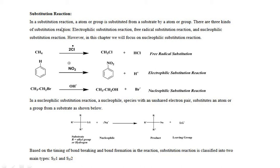Substitution reaction kya hoga? In a substitution reaction, an atom or group of atoms is substituted from a substrate by another atom or group of atoms. Jo substrate molecule hoga, us mein se jo atom ya group of atoms hoga, woh replace hoga by some other atom. Substitution reaction teen types ki hoti hai: free-radical substitution reaction, nucleophilic substitution reaction, ya phir electrophilic substitution reaction.